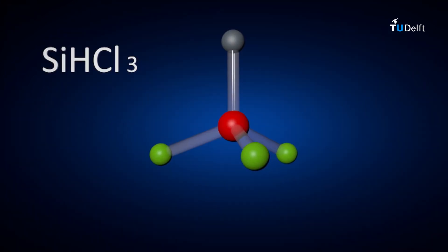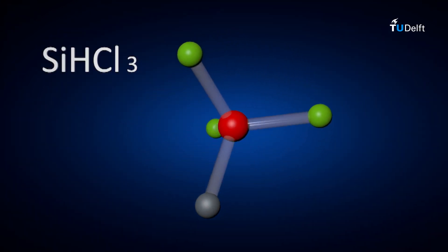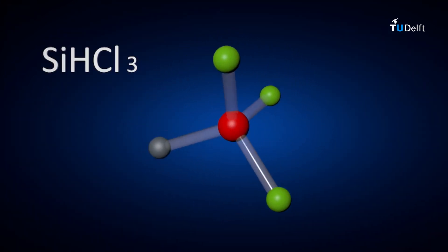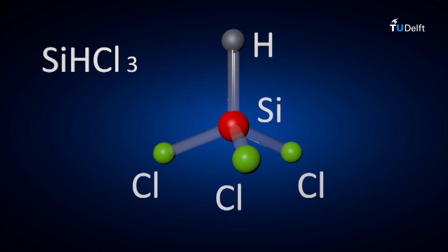Trichlorosilane is a molecule that contains one silicon atom, three chlorine atoms, and one hydrogen atom. The trichlorosilane gas is then cooled and liquefied. Impurities with higher or lower boiling points are removed using distillation.